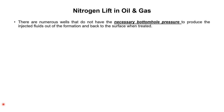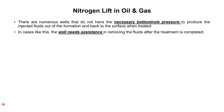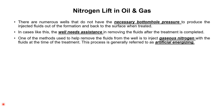There are numerous wells that do not have the necessary bottom hole pressure to produce the injected fluids out of the formation and back to the surface when treated. So in this case, the well needs assistance in removing the fluid after the treatment has been completed. One of the methods used to help remove the fluids from the well is to inject gaseous nitrogen with the fluids at the time of treatment. In this way, after the completion of the treatments, due to the energized fluid, when the nitrogen flows back, the fluid also flows back. This process is known as artificial energizing.